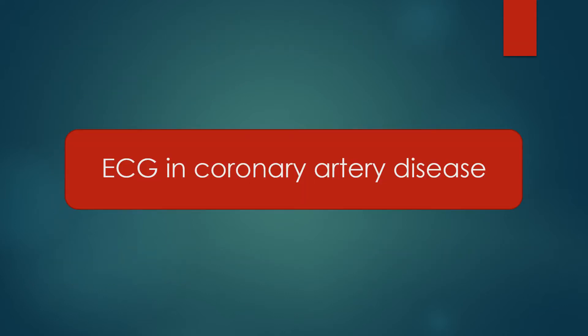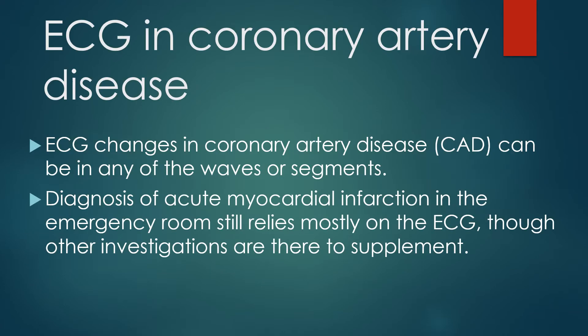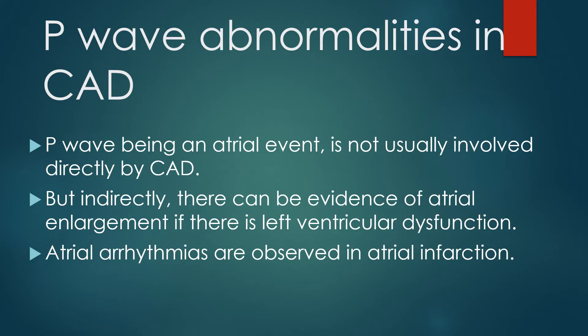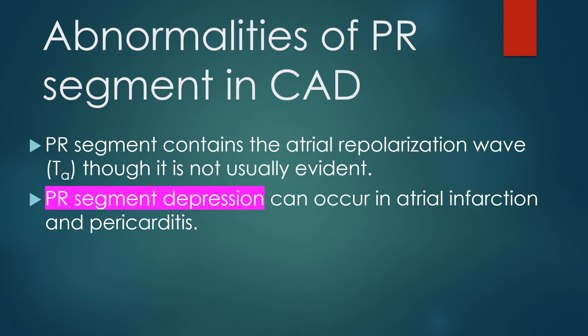ECG changes in coronary artery disease can be in any of the waves or segments. Diagnosis of acute myocardial infarction in the emergency room still relies mostly on the ECG. P wave, being an atrial event, is not usually directly involved in coronary artery disease, but indirectly there can be evidence of atrial enlargement if there is left ventricular dysfunction. Atrial arrhythmias are observed in atrial infarction. PR segment contains the atrial repolarization wave or TA wave, though it is not usually evident, and PR segment depression can occur in atrial infarction and pericarditis.